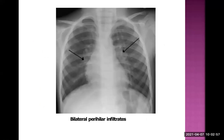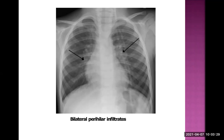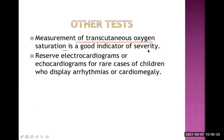On a chest X-ray, bilateral perihilar infiltrates are present — patchy white infiltration around the hilar area, which is very common in viral infection. Pulse oximetry is another important test. The severity of hypoxia or hypoxemia can be detected with pulse oximetry, and it is considered the fifth vital sign. If the oxygen saturation is below 92%, the patient needs admission. These days, pulse oximetry is also used in COVID-19 to determine whether patients require hospital admission.